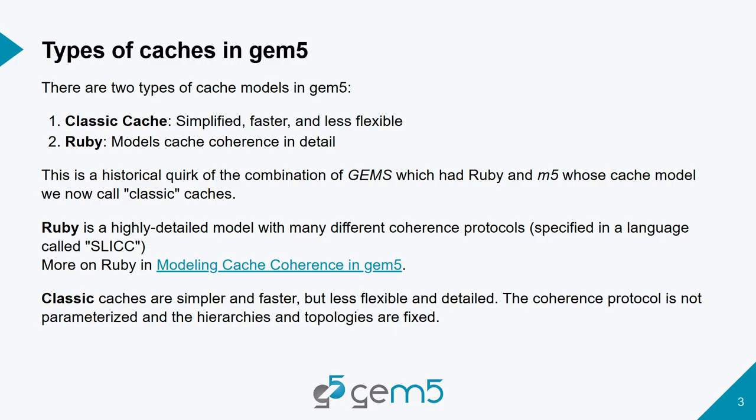The classic caches are simpler than Ruby, so they have less detail. Depending on the system you're modeling, they might not be the right choice, but they are generally much faster to simulate. In some ways they're more flexible, and in some ways less flexible, as we'll see.